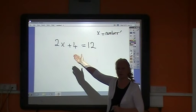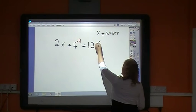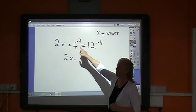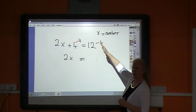I take away a 4 from this side and I take away a 4 from this side. And what do I get left behind with this time? I get left behind with 2x. Plus 4 minus 4 has gone to nothing. And I get 12 minus 4 is 8.